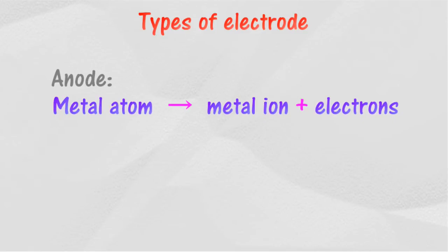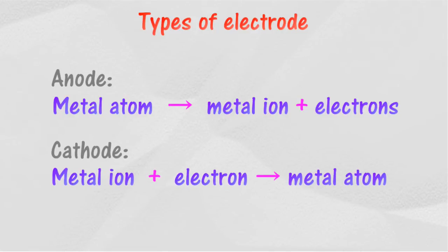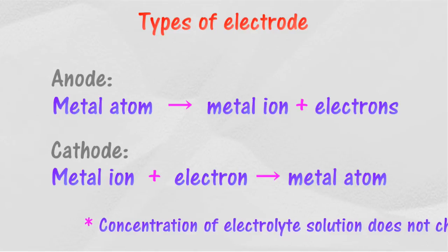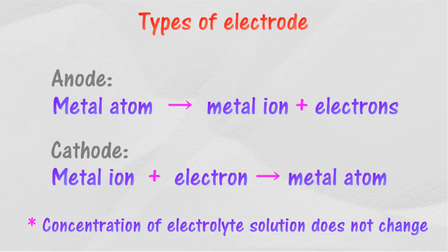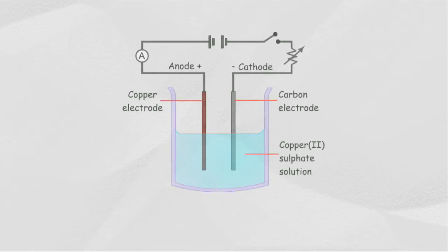If the type of metal used as the anode is similar to the type of metal ion found in the electrolyte solution, metal atoms will lose electrons to form metal ions at the anode, while metal ions will receive electrons and form metal atoms at the cathode. The concentration of the electrolyte solution does not change, because the rate of metal atoms becoming metal ions at the anode equals the rate of metal ions becoming metal atoms at the cathode.